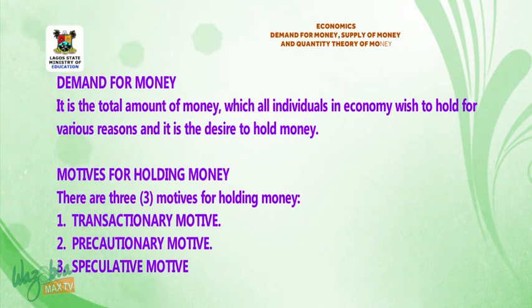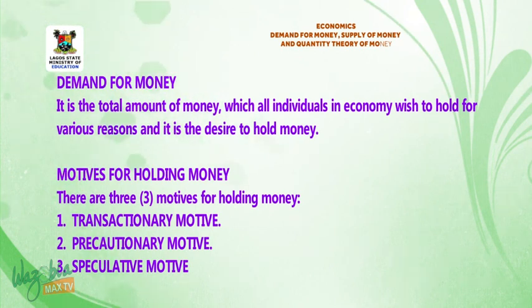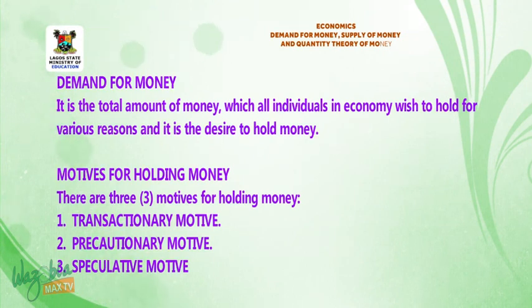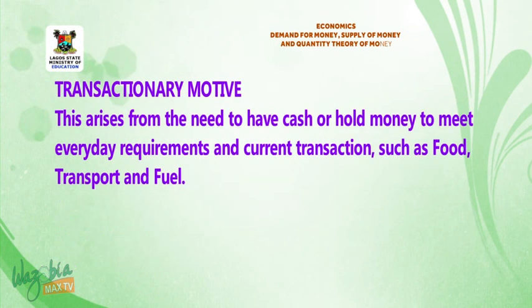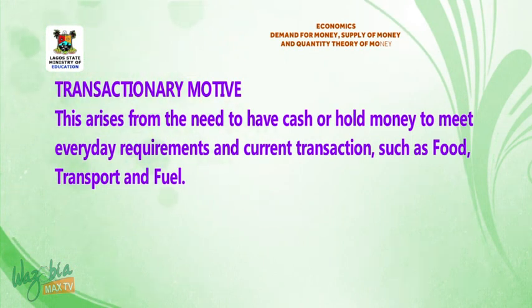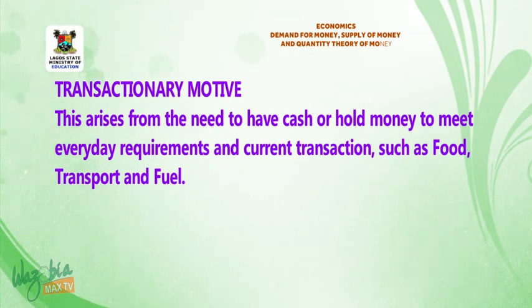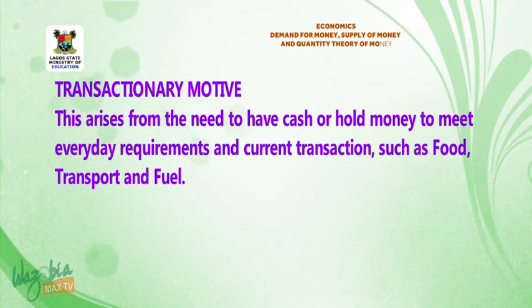There are three motives for holding money: transactionary motive, precautionary motive, and speculative motive. The transactionary motive arises from the need to have cash or owed money to meet everyday requirements and current transactions such as food, transport, and fuel.